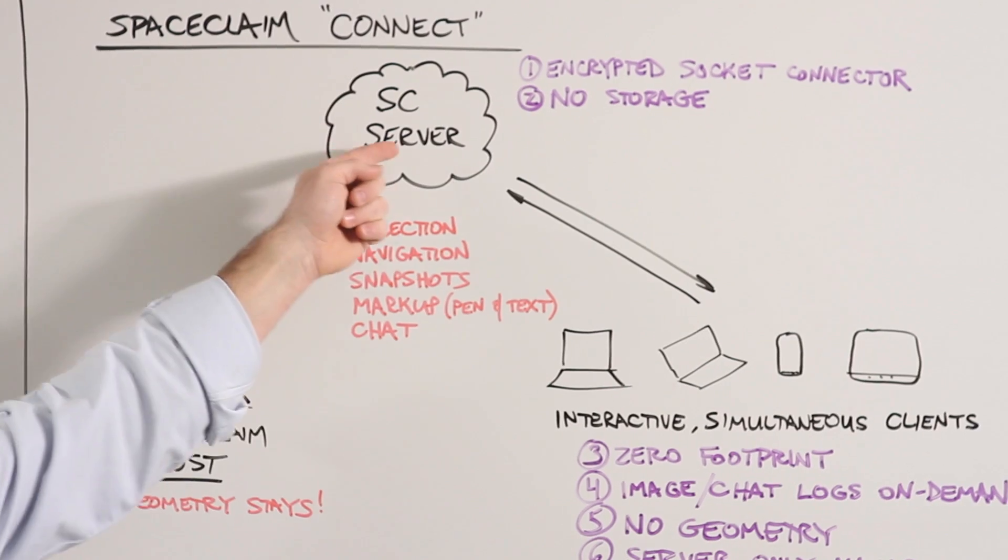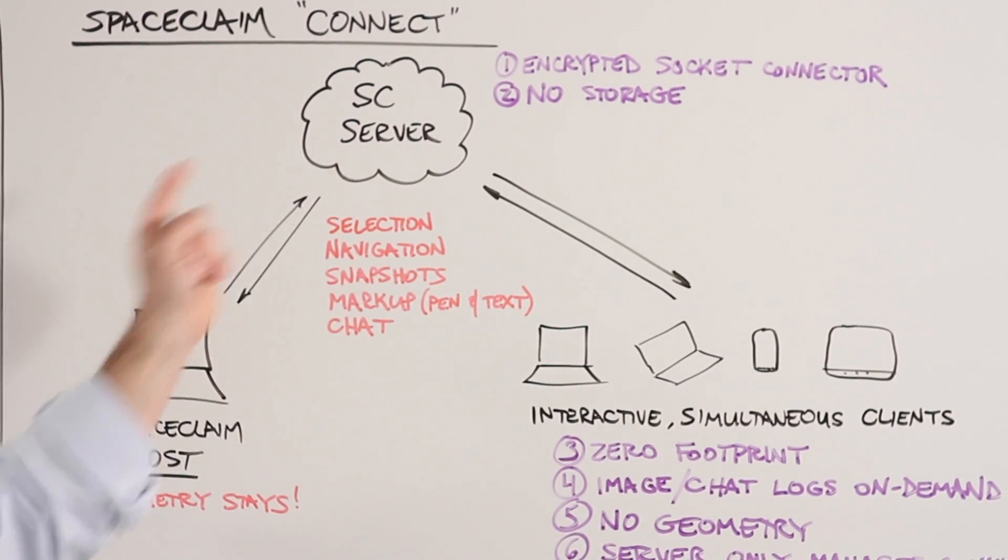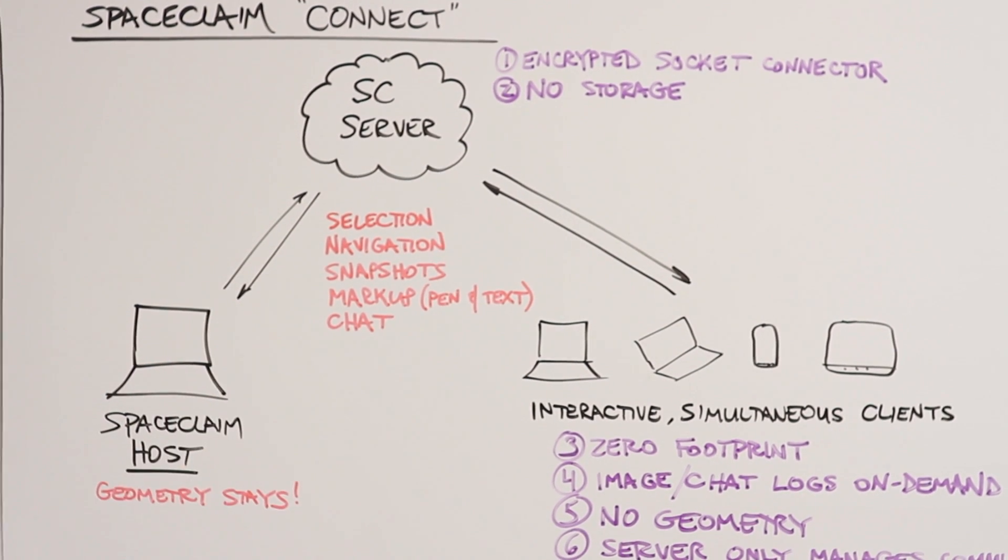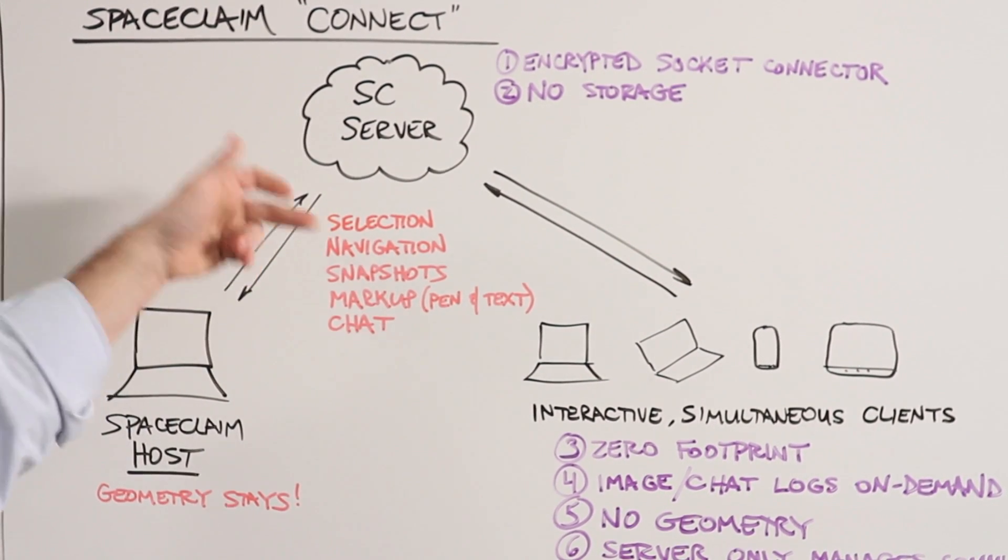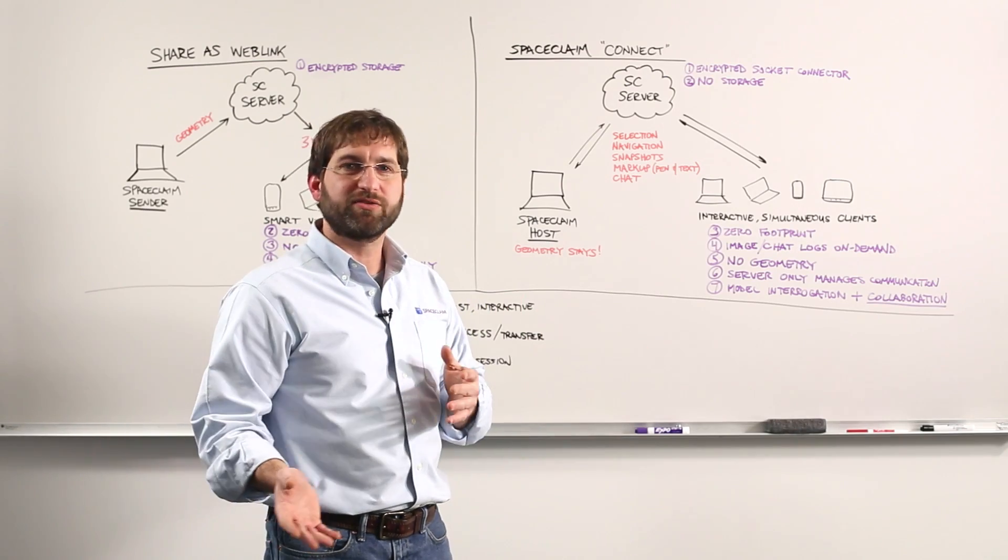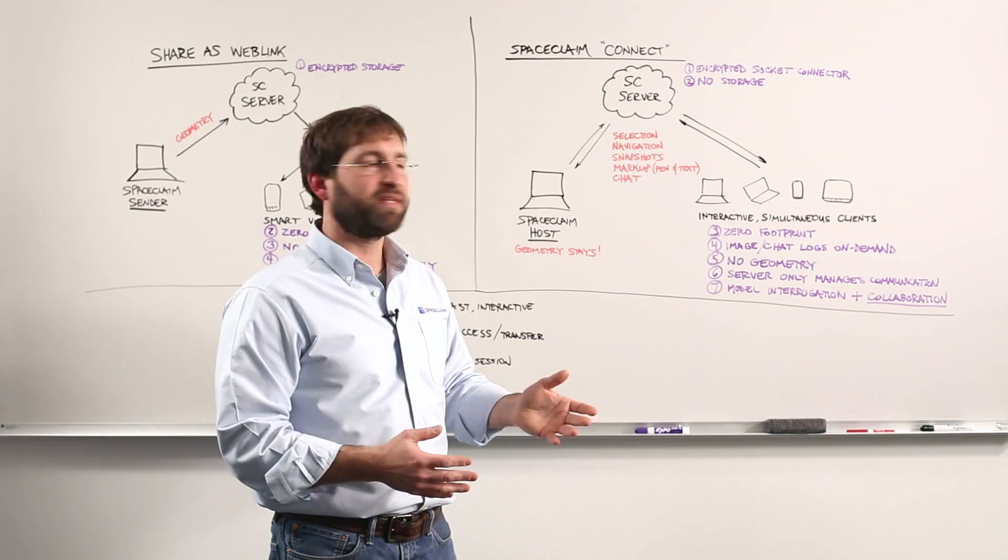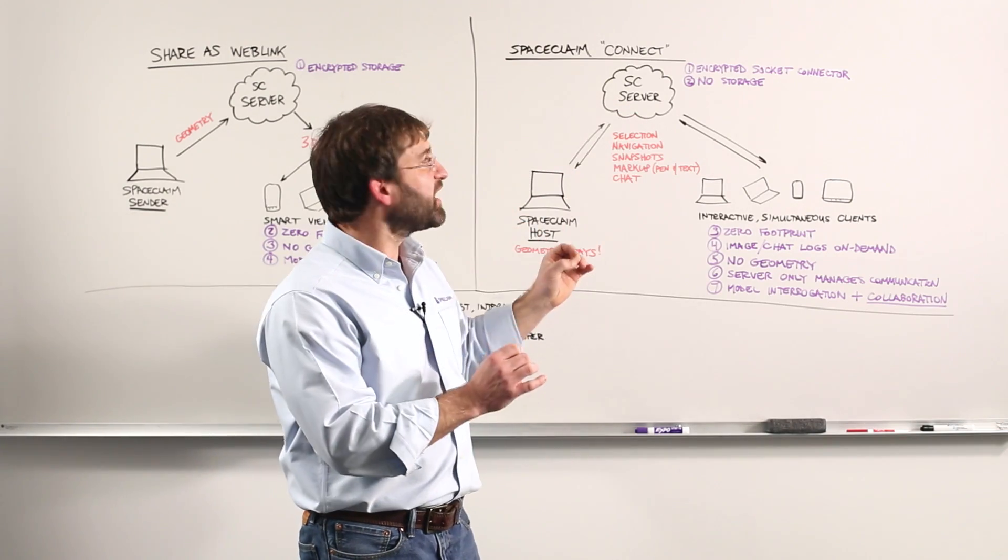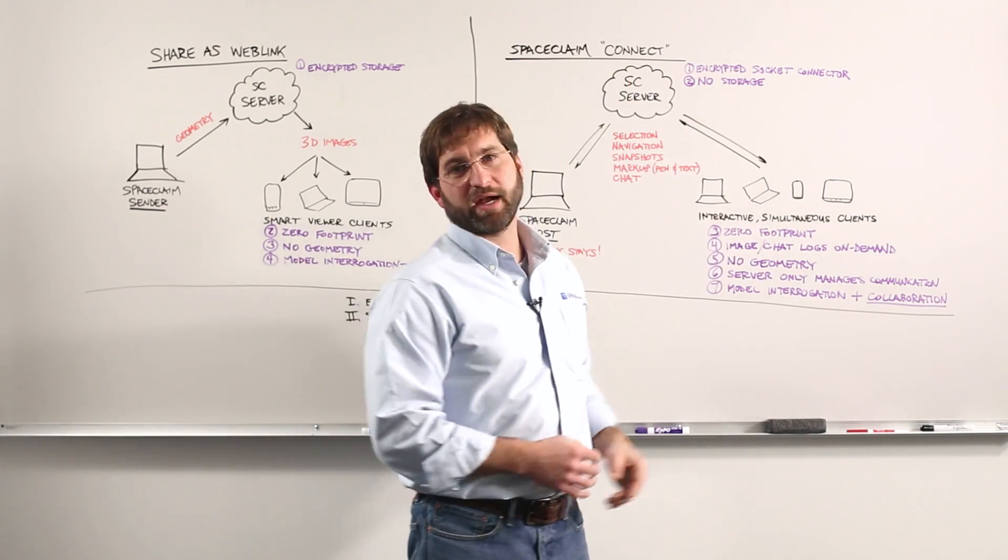What is sent to the SpaceClaim server and down to clients and back and forth is no geometry, but rather selection, navigation, any snapshots you're taking, any markups with pen and text tools, any chatting you're doing. That's all that's passing. What's encrypted this time is encrypted web sockets.